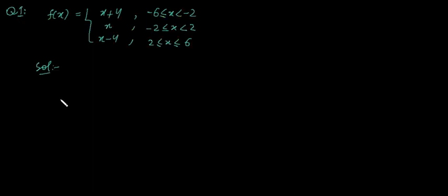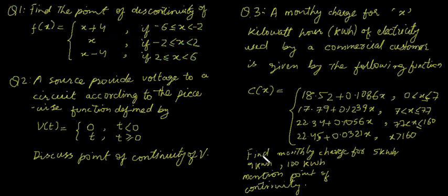Let us discuss the solution of question number 1. In this question, we have given a function defined by three formulas for three pieces of the values of x. In such type of function, to find the continuity or discontinuity, we have to find the turning points of these three pieces. In this video lecture, we will discuss some solutions to questions related to the continuity of piecewise functions.